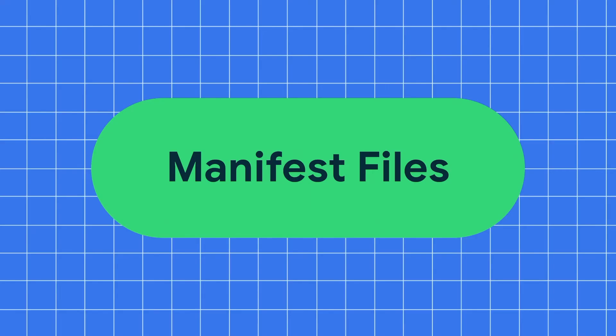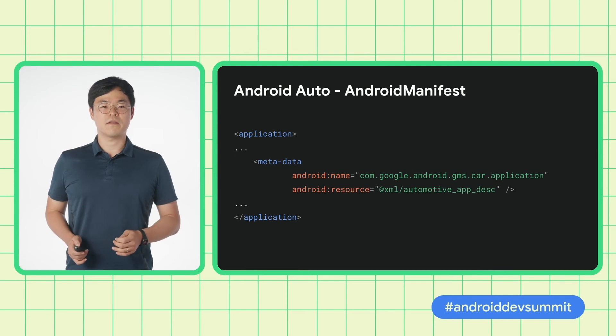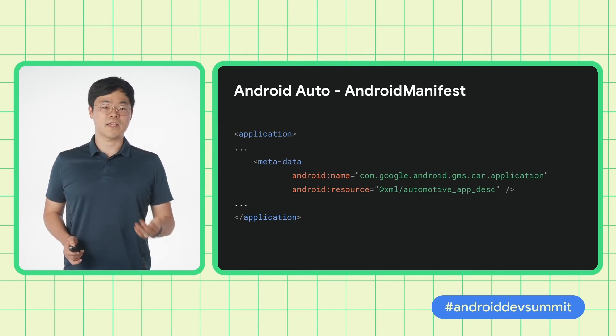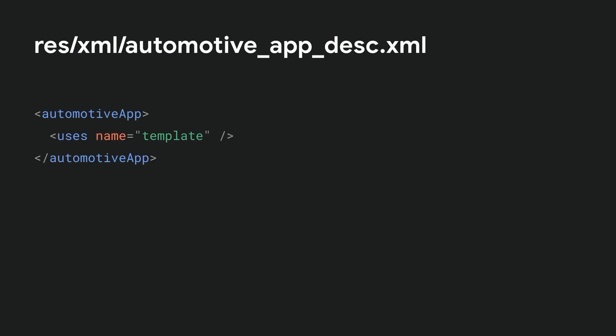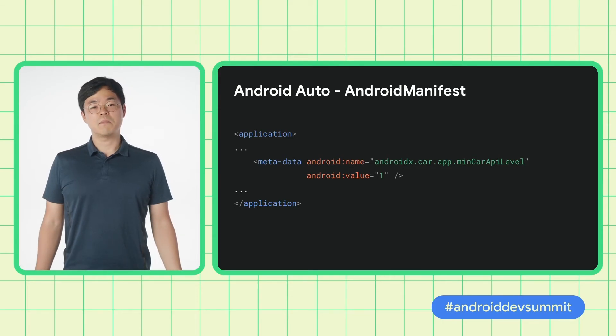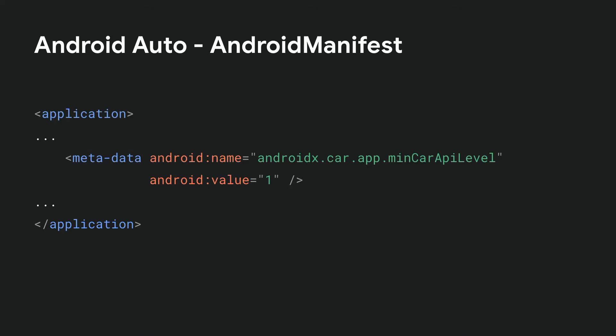Congratulations for finishing the code section. We're almost there. In the next section, we will go over the manifest files for Android Auto and Automotive OS build targets. In the Android Auto manifest file, we add this metadata in our application element. This metadata allows Android Auto to identify your app as a car app. We also place the corresponding XML file in our resources directory. Next, we define the minimum car API level for our app. Higher minimum API level means that we can use the latest library features, but some hosts may not support the API level.